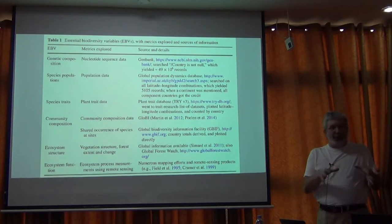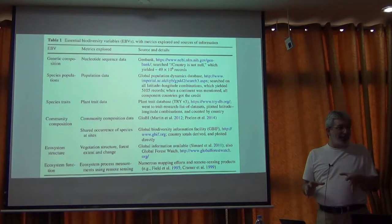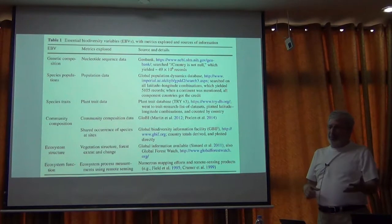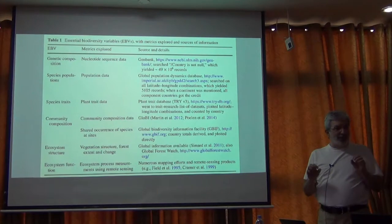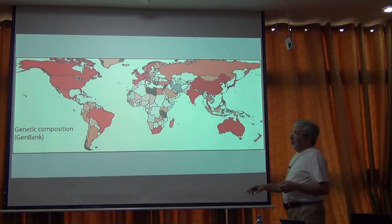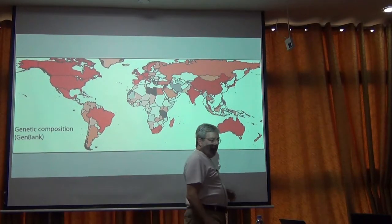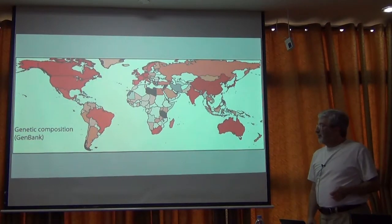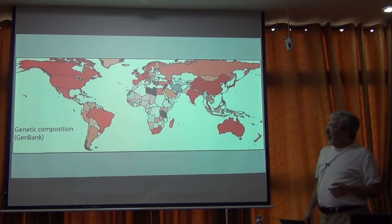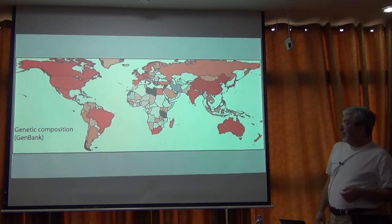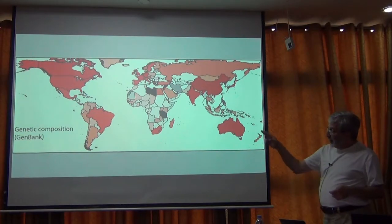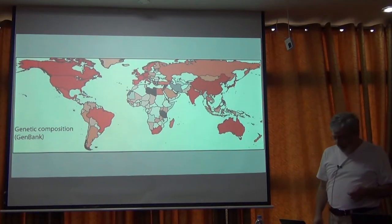What we've done is gone to the biggest source for each one of these EBVs, mined their data, and found some way to map it. Some of it is aggregated by country, some of it is smoothed — a variety of methods — so it's mostly visual. I already showed you this map of genetic composition. These are data mined out of GenBank, and we've scanned through the location field for matches to the names of the 200-some countries around the world. And that's what the world looks like — essentially Europe, China, India, and North America are the dominant foci. Australia and to some degree Brazil appear, but a lot of South America, Africa, and Central Asia and the Middle East are relatively empty.